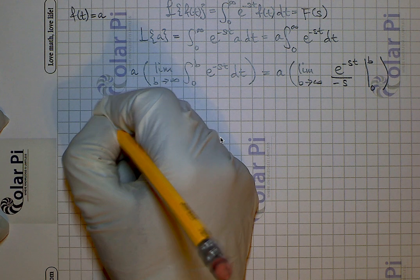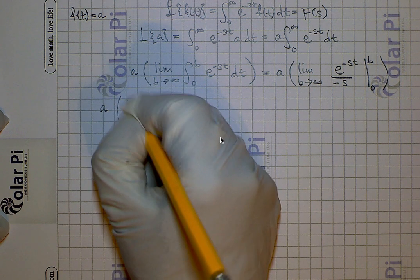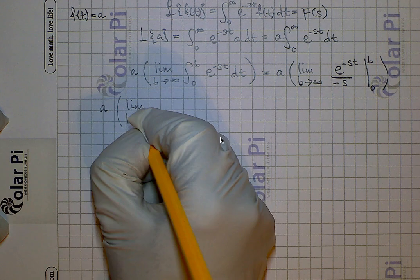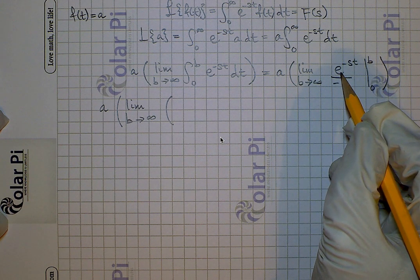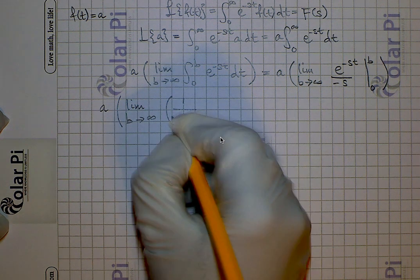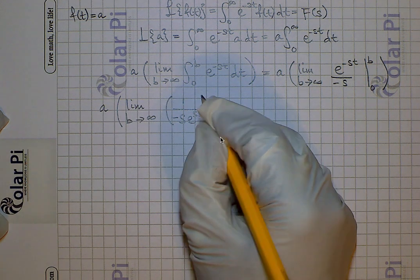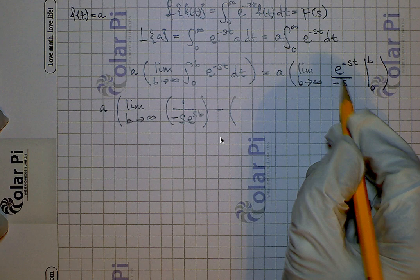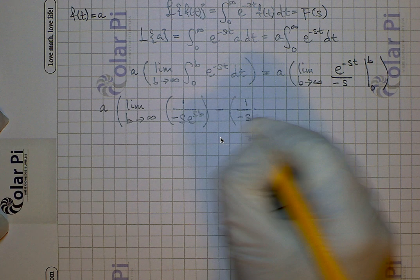Now, before we take the limit as b goes to infinity, let's evaluate at b and 0 and then take the difference. Plugging in b gives e to the negative sb, which I'll write as 1 over negative s times e to the positive sb. Then minus plugging in 0: e to the 0 is just 1, so minus 1 over negative s.